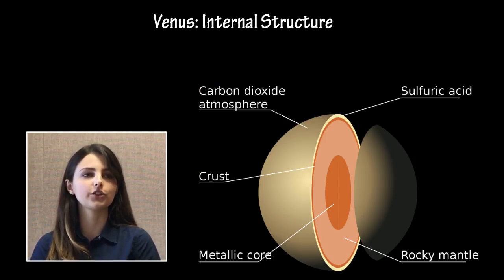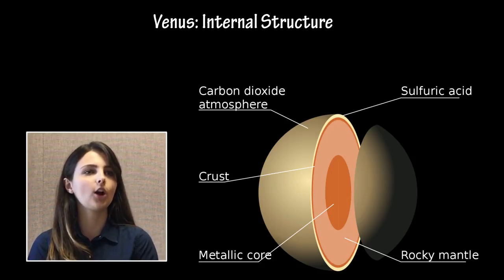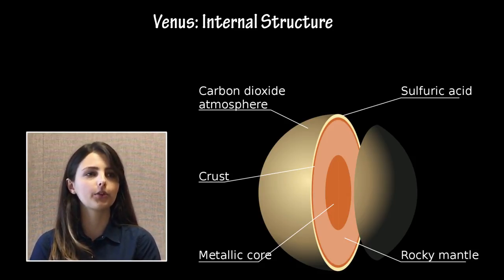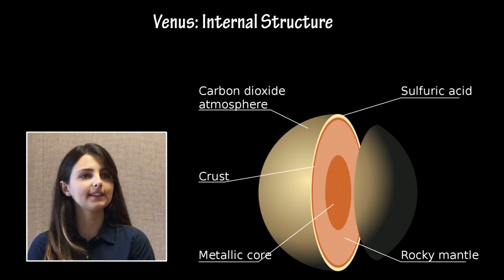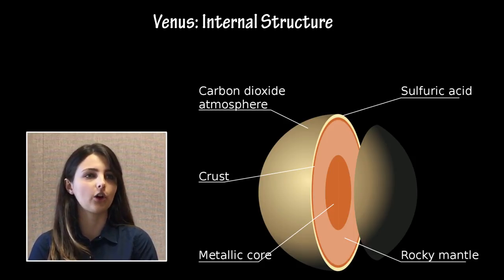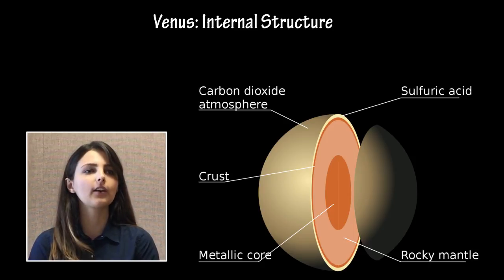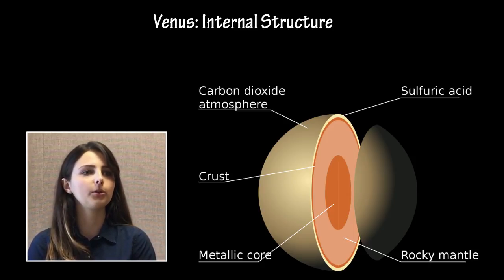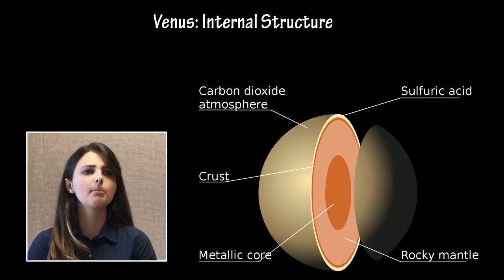Venus is the second largest terrestrial planet and has the longest day in the solar system, equal to over 240 Earth days. Additionally, Venus rotates in the opposite direction that it orbits the sun, unlike most solar system objects. The reason for this angular momentum-defying behavior is unknown, but many scientists believe it can be attributed to a collision with a large body early in Venus's evolution. Most scientists believe Venus and Earth have similar core-mantle-crust structures, but the lack of a strong magnetic field on Venus may contribute to an absence of core solidification. Very little is known about the interior of Venus, in part because its exterior conditions make it so difficult to study.